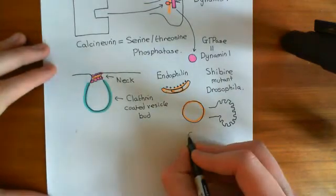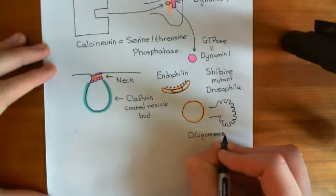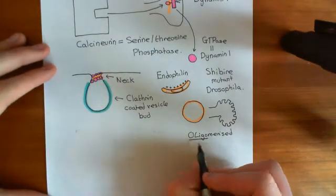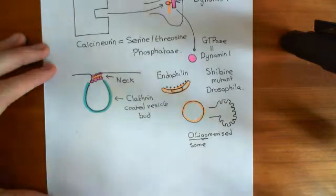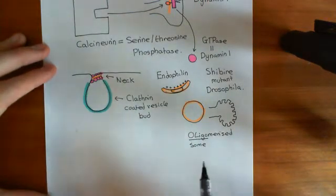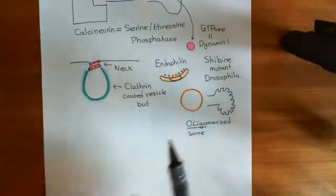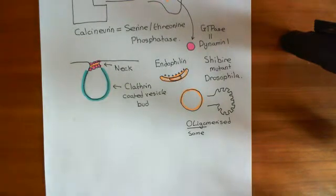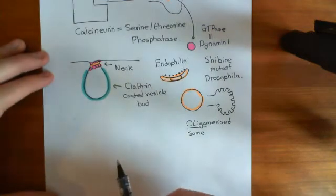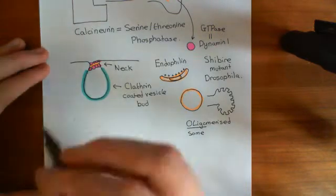Oligomerized just means that it has joined with other dynamin-1 proteins. Oligo means 'some,' basically — it's a similar word to polymerized, perhaps suggesting slightly fewer units joined together. When you oligomerize or polymerize dynamin-1, its GTPase activity becomes turned on, so it's going to start hydrolyzing GTP, guanosine triphosphate, which is present in the cytoplasm of the cell.